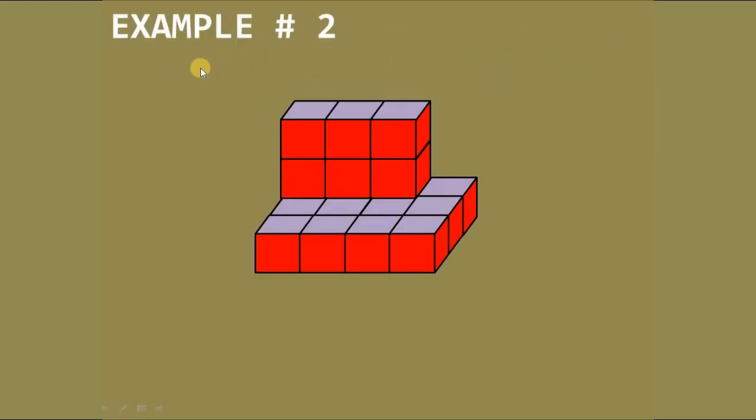So we proceed with example number two. So we do the same procedure as we did in example number one. So we have to separate in order to count the small boxes.